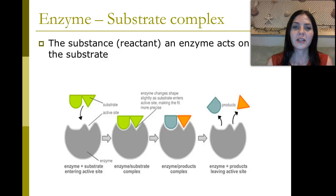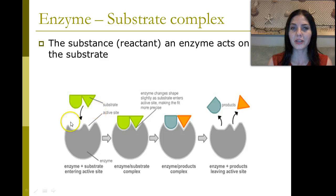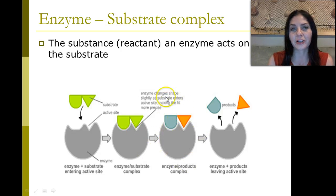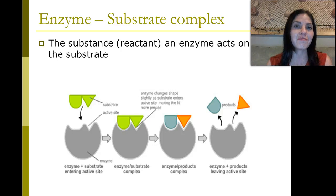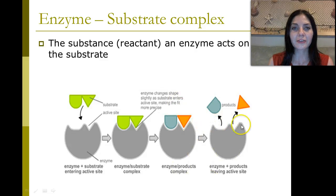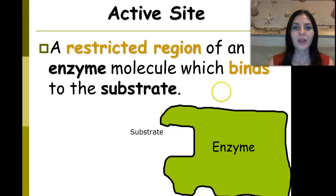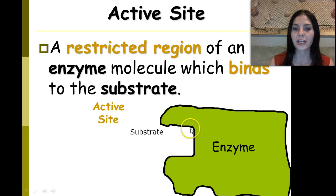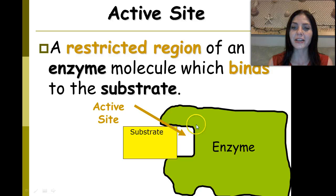The enzyme-substrate complex: the substance, or reactant, that an enzyme acts on is called a substrate. The substrate is then going to bind to the active site of the enzyme. The enzyme will then do its magic. In this particular instance, it's going to be adding water through the process of hydrolysis, which is a catabolic reaction, meaning that we are breaking those bonds apart. So, this enzyme is going to break the substrate into monomers. After it breaks it, the enzyme will release the substrate and the cell will be able to use this for whatever it needs. A restricted region of an enzyme molecule which bonds to the substrate is called the active site — this is where the substrate binds.